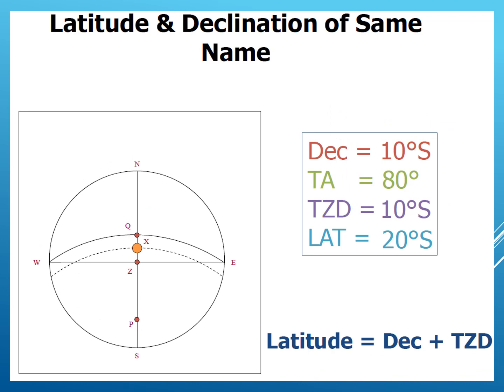In the third example, the declination is again south — the celestial body is south of the equinoxial. QX, the declination, is 10 degrees south. True altitude is 80 degrees and true zenith distance ZX is 10 degrees. The latitude ZQ equals ZX plus QX: 10 plus 10 equals 20 degrees south. The observer is still south of the equinoxial, and that is why the latitude is south.